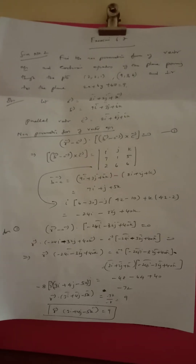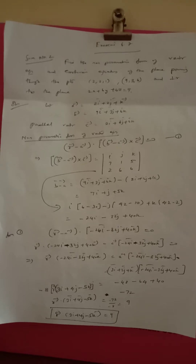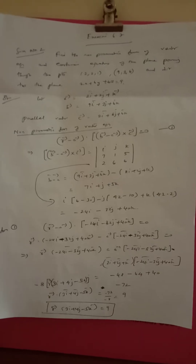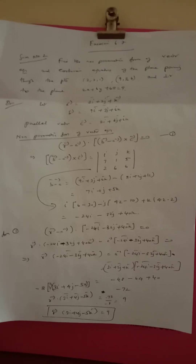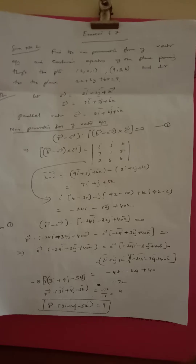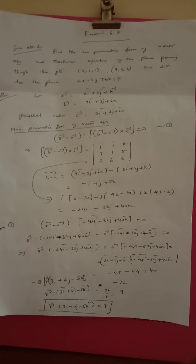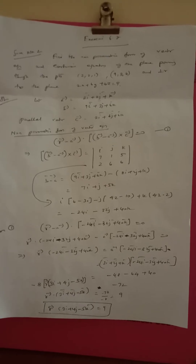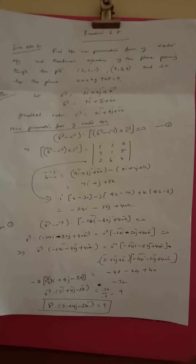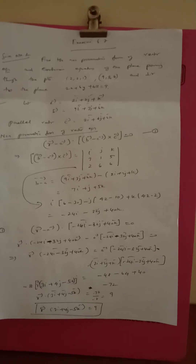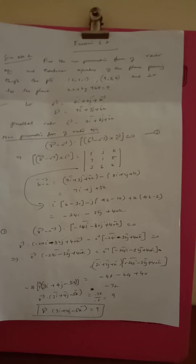This is the non-parametric vector equation and Cartesian equation. If you have 2 points and the line is perpendicular to the plane — 2x + 6y + 6z = 9 — this gives the non-parametric vector equation.